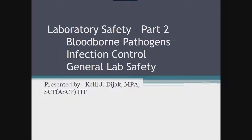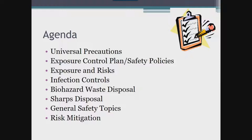This presentation is part two of a two-part series on laboratory safety. In this second part, we are going to focus on bloodborne pathogen safety and then hit on several general lab safety topics. The agenda for this afternoon will include: universal precautions and the purpose of the exposure control plan and safety policies; exposures and risks found in the laboratory and infection controls in place to protect against them; biohazard waste and sharps disposal; several general safety topics — the balance from part one; and finally, some risk mitigation processes and tools.